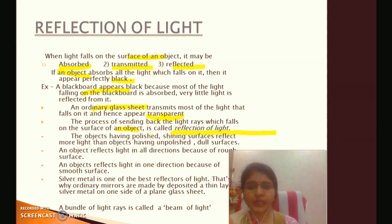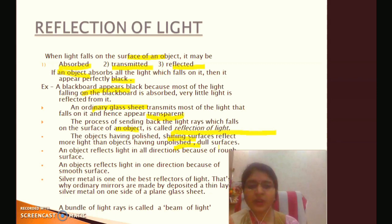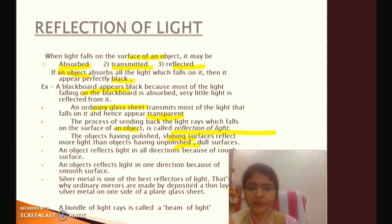Shining and smooth surfaces reflect more light compared to surfaces which are not polished or are dull. In dull and unpolished surfaces, less light is reflected. Shining and smooth surfaces give better reflection of light.